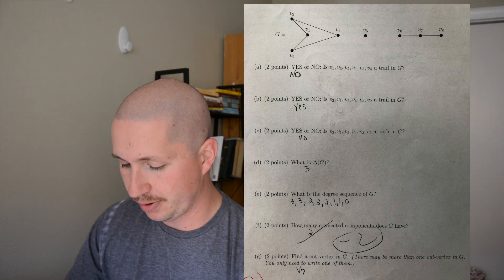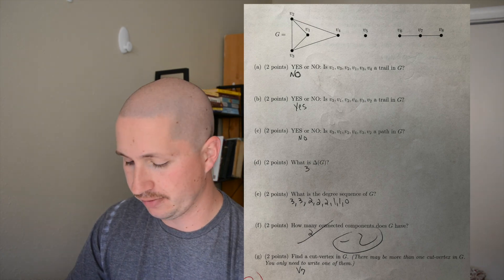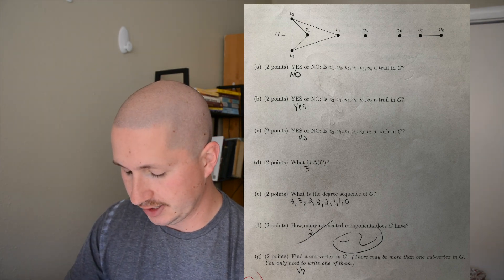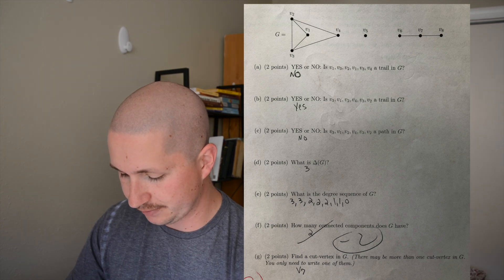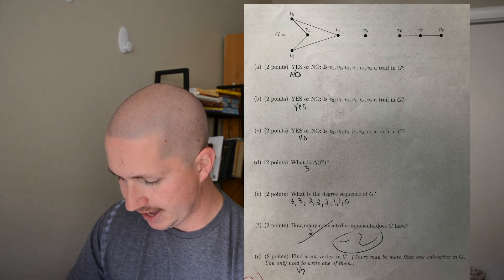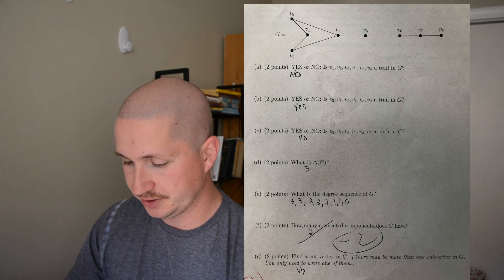Same thing with part D, what is the big delta of G? So the maximum degree value found. Same thing with the degree sequence - that's just numbering the degrees from greatest to smallest in the graph. How many connected components it has, which I got wrong, and find a cut vertex. All of these are just application of definitions, pretty straightforward stuff.